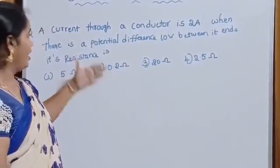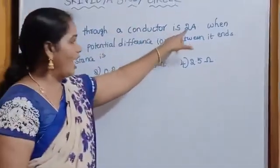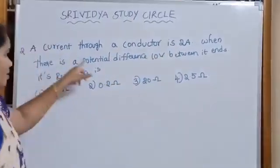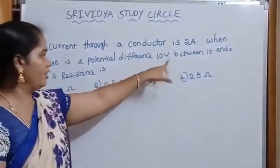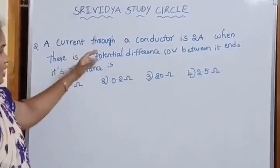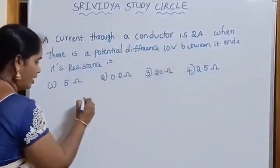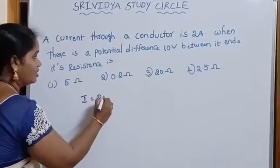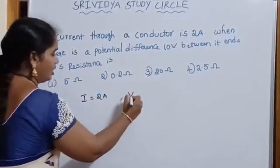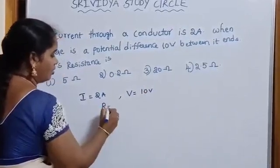Next, we have to discuss another problem. Here, a current through a conductor is 2 amperes. When there is a potential difference, 10 volts between it and its resistance is. Here given ampere, it means current. Here given I is equal to 2 amperes and potential difference V is equal to 10 volts and R is equal to question mark.